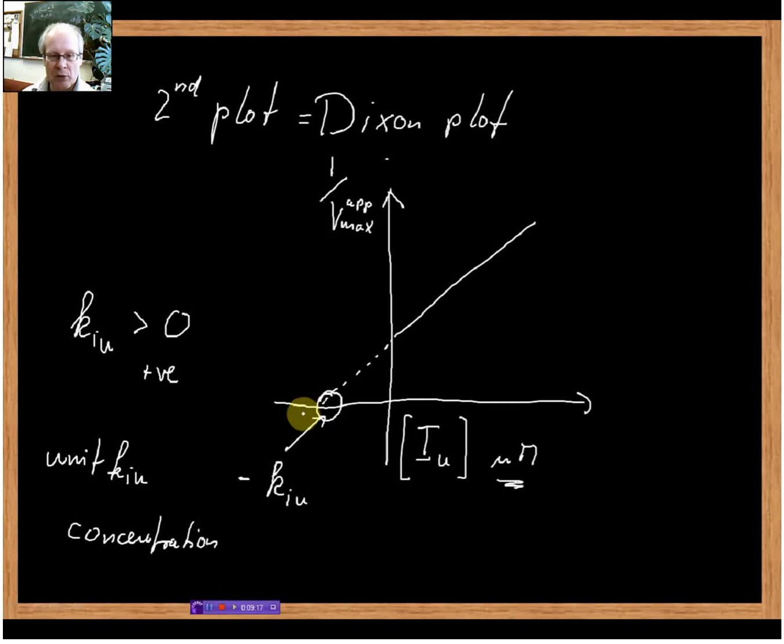Last but not least, I would like to introduce you to the concept of the binding constant. The binding constant, usually abbreviated as KiU, is nothing else but the inverse of the dissociation constant, so it would be 1 over KiU. The units for the binding constant would be 1 over concentration. Usually we don't bother very much with the binding constant because we get all the data from KiU.